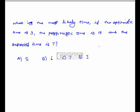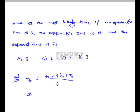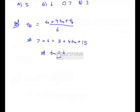What is the most likely time if the optimistic time is 3, the pessimistic time is 15, and the expected time is 7? The expected time formula is: (optimistic time + 4 × most likely time + pessimistic time) / 6. Setting up: 7 × 6 = 3 + 4Tm + 15. Solving gives Tm = 6. So the right option is B.